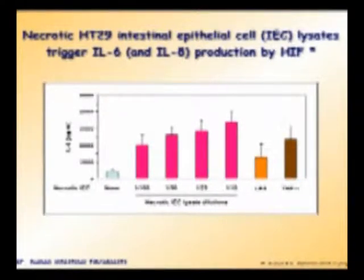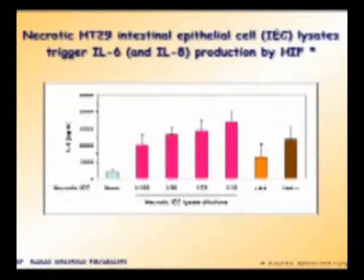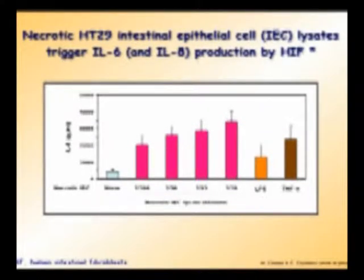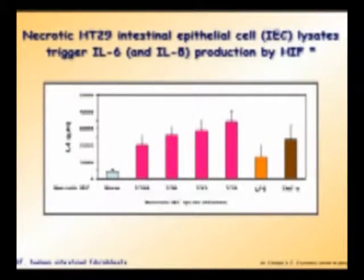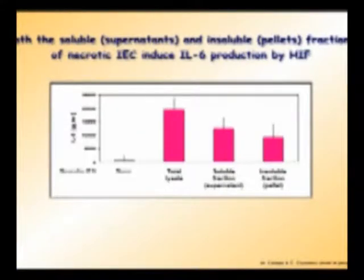If you look here, you can see that when human intestinal fibroblasts (HIF) are exposed to necrotic cell supernatant, there is an induction of very high levels of IL-6 and IL-8 — higher than an optimal dose of LPS or even TNF. So there is something in necrotic cell products that causes production of chemokines and cytokines.